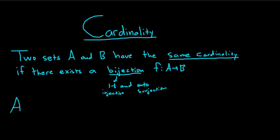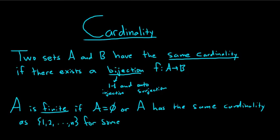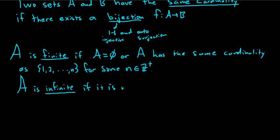A set A is finite if it's either the empty set, or A has the same cardinality as the set from 1 to n for some fixed positive integer n, where Z+ is the set of positive integers. A set is infinite if it is not finite.